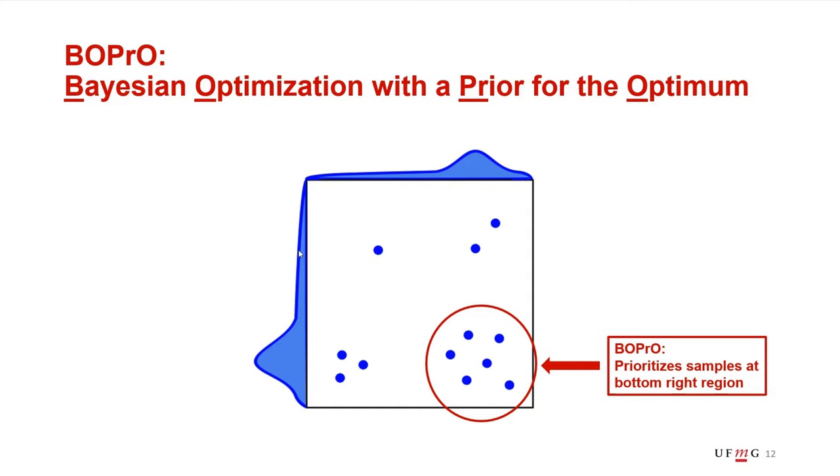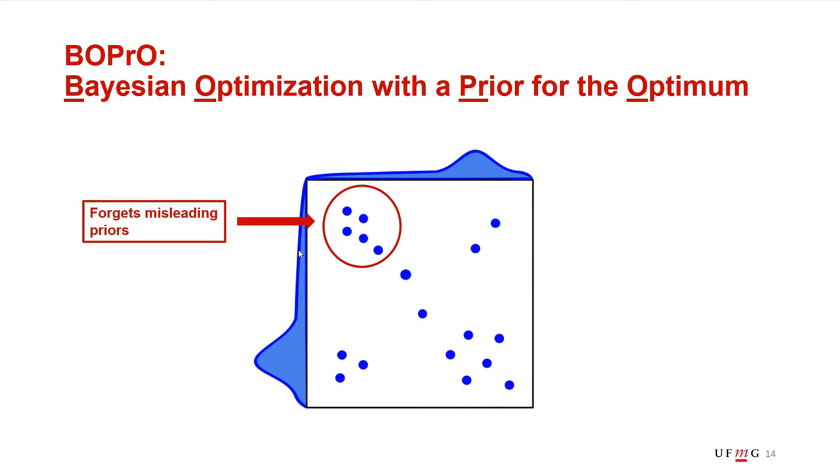At the same time, BOPrO combines this information with a model that learns from the data where to find good configurations and, as a result, is able to find configurations better and faster. At the same time, since BOPrO has an independently trained model that learns only from the data, it is also able to forget the prior and still find good configurations in the event that the prior is misleading or wrong, if, for example, the application behaves a little bit different from what the expert expected or from what the expert thought would happen.